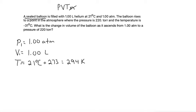Those are our P1, V1, and T1. Next, since it says the balloon rises to a point in the atmosphere where the pressure is 220 torr, we know that our new pressure P2 is 220 torr.